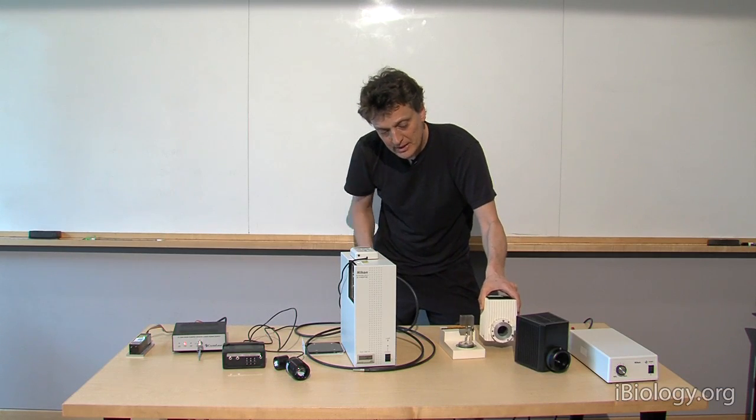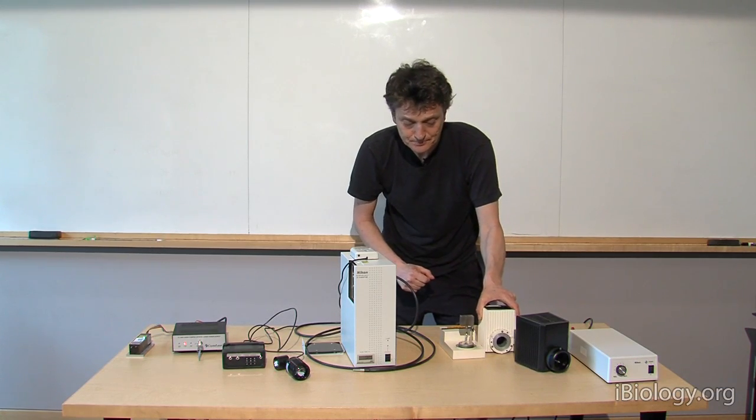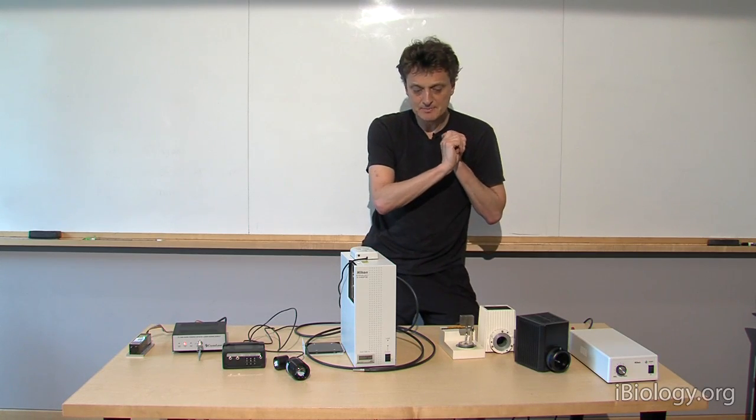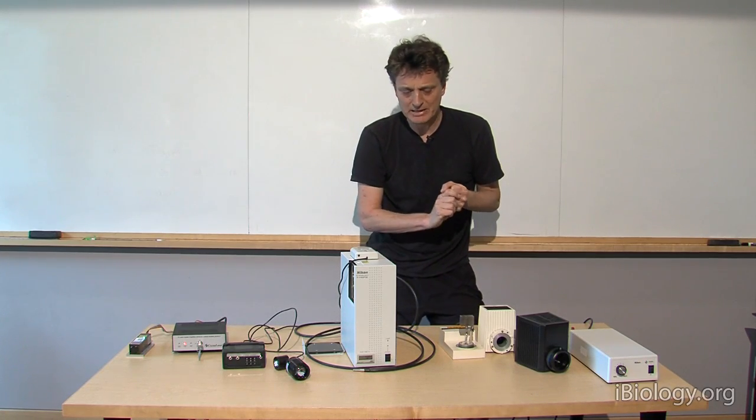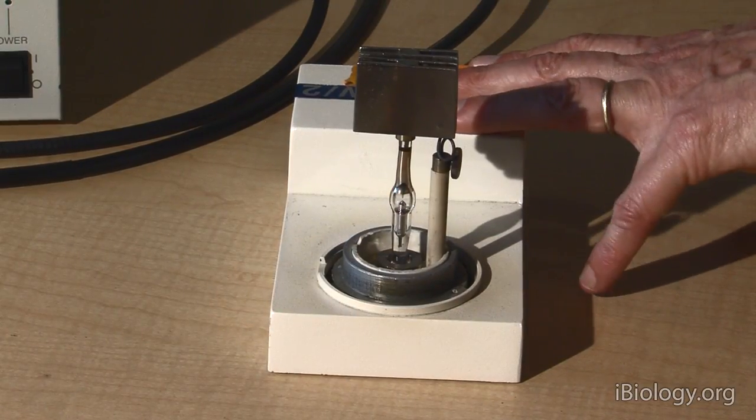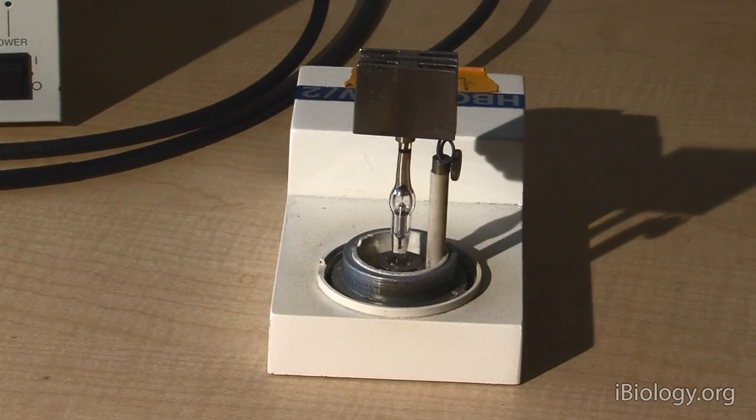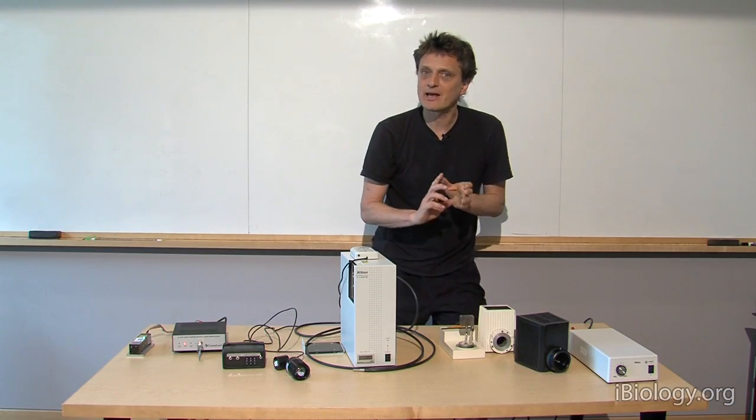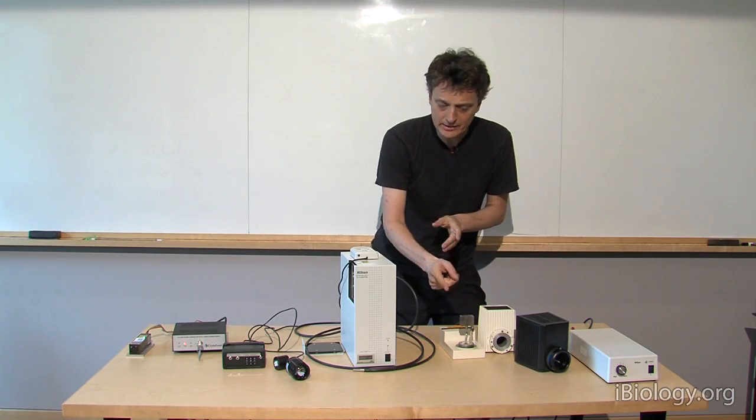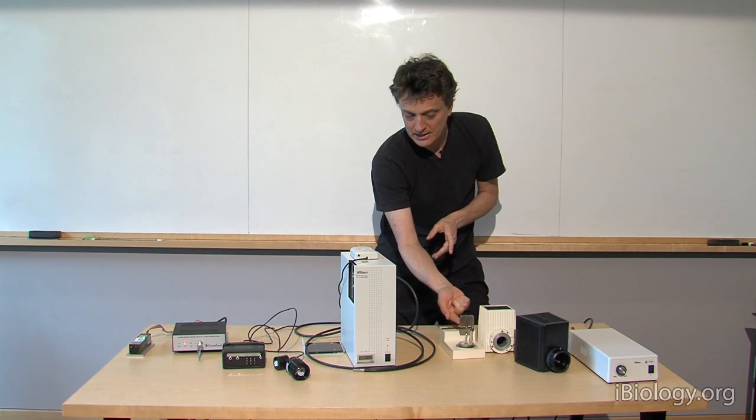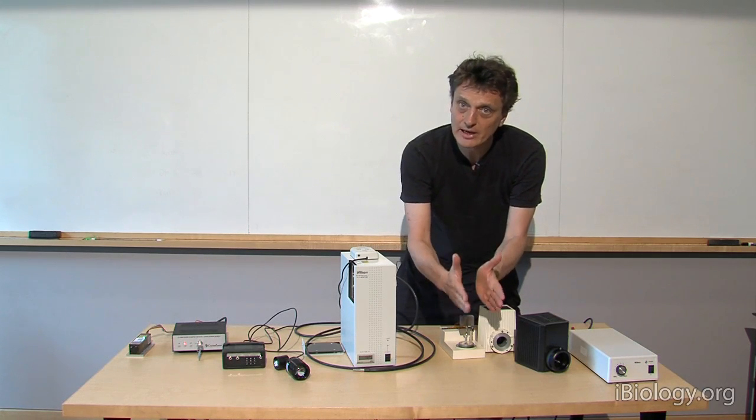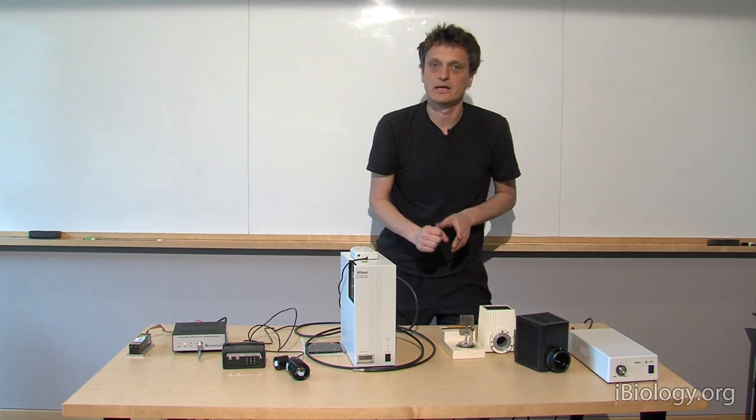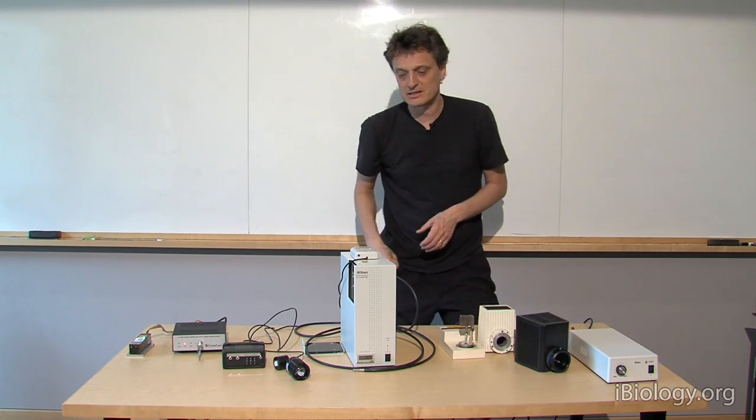We don't like them that much anymore and that is because you have to replace them after about 200 hours. Also when these things break, they are a big hazard. Immediately evacuate the room if that happens. And they are kind of a pain to align. You have to set them up so that this arc is positioned in the right place with respect to the condenser lens so that the light goes exactly through the optical path of the microscope.